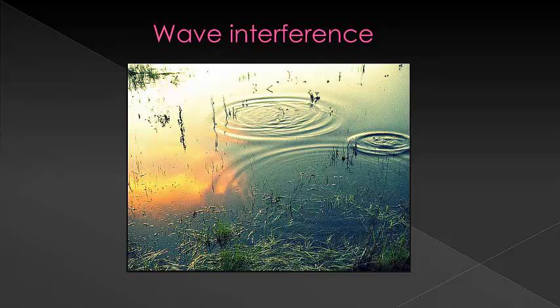Waves interfere with each other when they come into contact. A great way of being able to picture this is thinking about what occurs when you drop two pebbles in a pond. The ripples will come in contact with each other, making new patterns that are very different from just simple circles. The same thing happens with light waves.